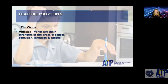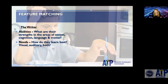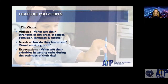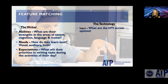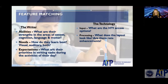When we look at feature matching for individuals, we look at the writer's strengths in the areas of the senses, cognition, language, and motor that will impact writing. What are their needs regarding how they use technology and what kinds of supports they need? What are the expectations and priorities for writing tasks throughout the day? Somebody's abilities and needs are going to impact their input method, that human-technology interface, their cognition and senses will impact layout, and what rate enhancements like word prediction you might use.